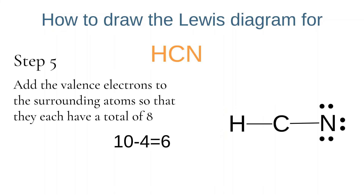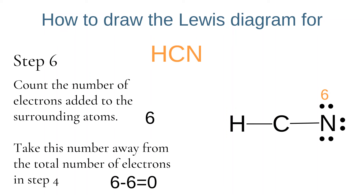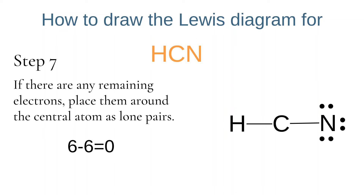We now add the remaining electrons to our surrounding atoms so they have a total of 8 electrons. However, hydrogen is an exception — it can hold a maximum of 2 electrons, so it already has a full outer shell with that single bond. Nitrogen already has 2 electrons in the single bond, so we add 6 more to give it a full outer shell of 8. We added 6 electrons to nitrogen, and 6 minus 6 is 0, so we do not need to add any lone pairs to the central carbon atom.